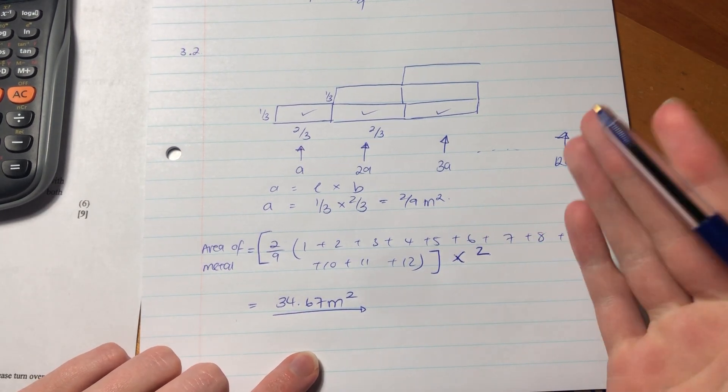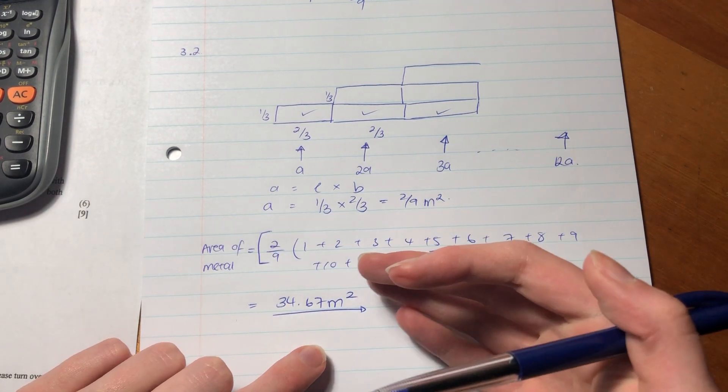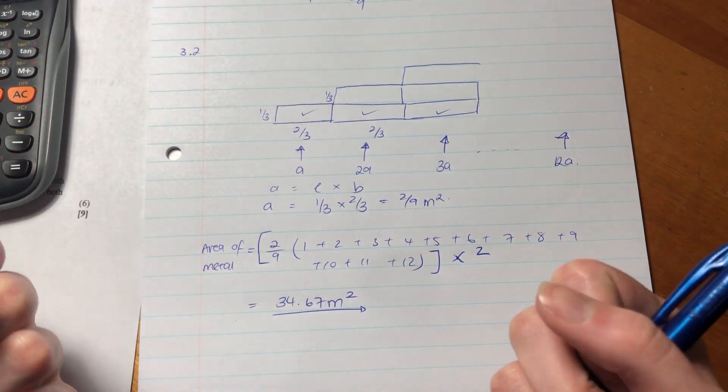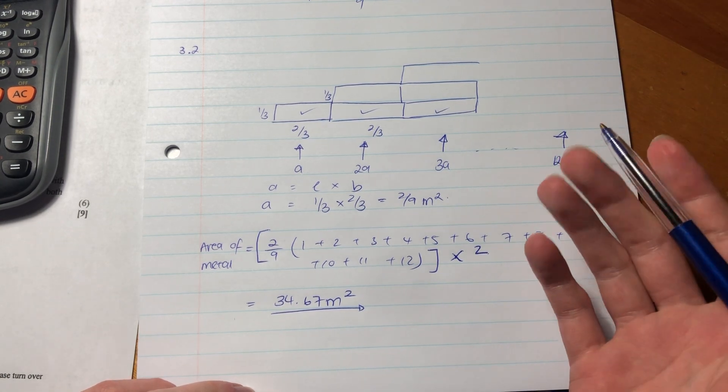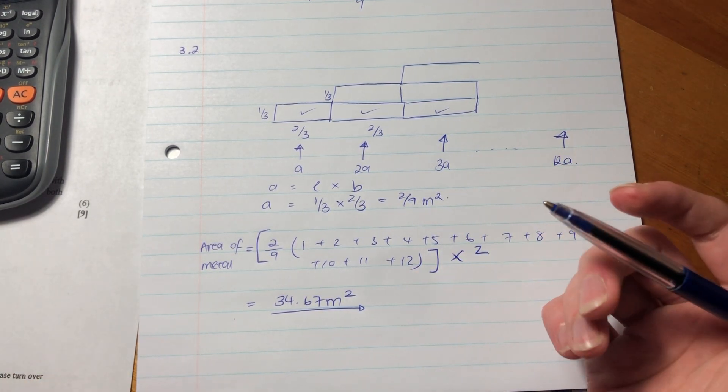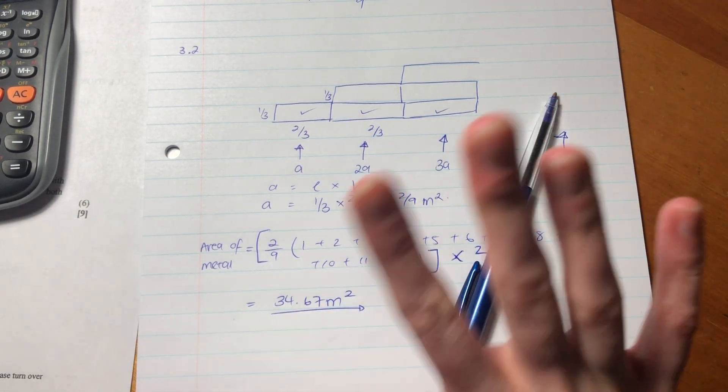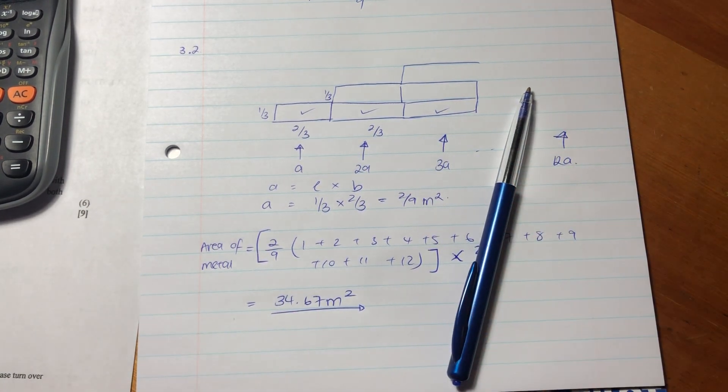Do not forget to include your units. When we're talking about area, volume, or currency, units give the question its essence—they tell us what we're measuring. If you just said 34.67, it's meaningless. You have to say meters squared. That's the end of question 3—not too difficult, but really interesting. Let's move on to question 4.